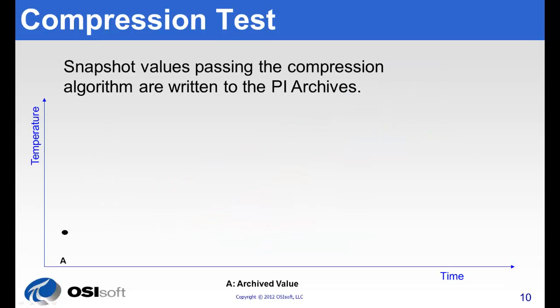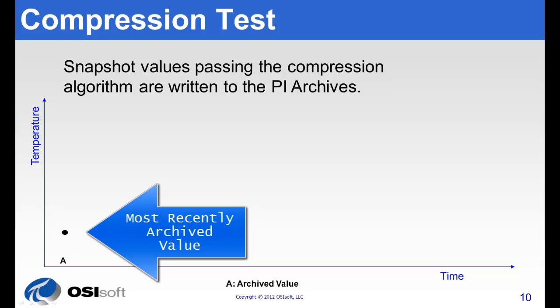Again, this is easiest to see in action. So we're going to see the compression test applied to all those raw values from before. We start with the most recent archive value that has made it into the PI archives.